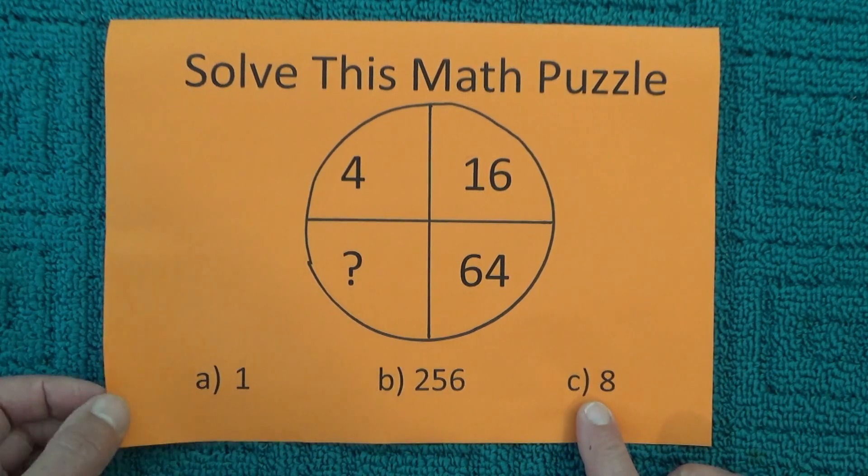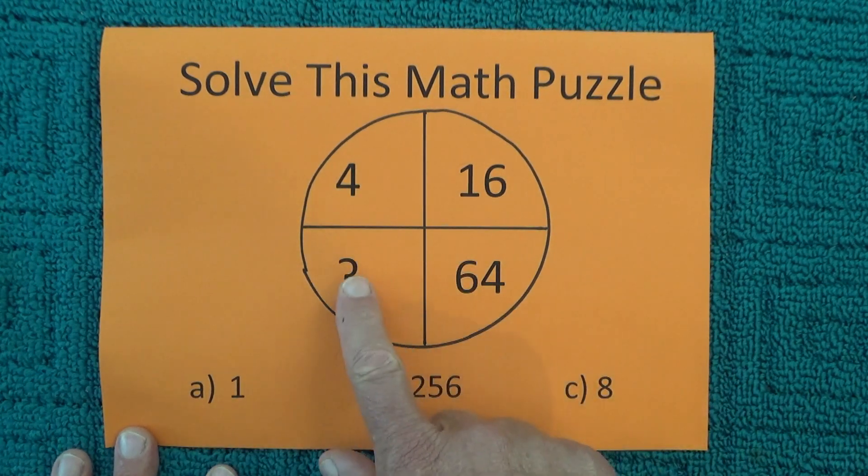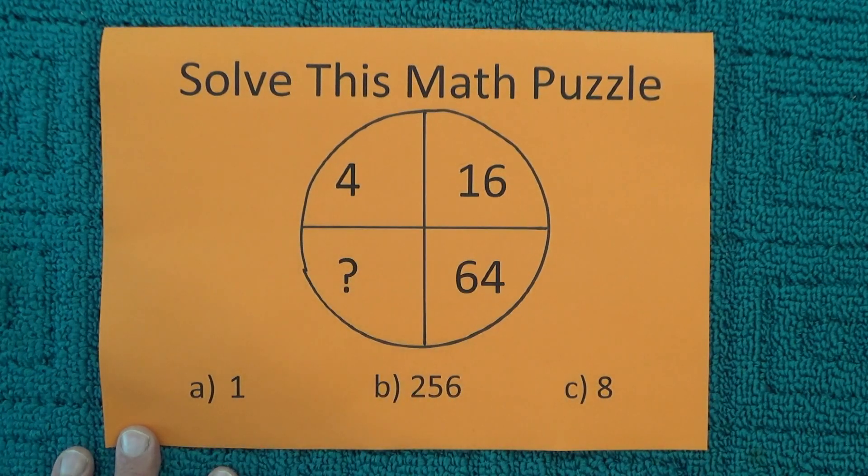And then thirdly, eight is also a possibility because four squared is 16, and then eight squared is 64.